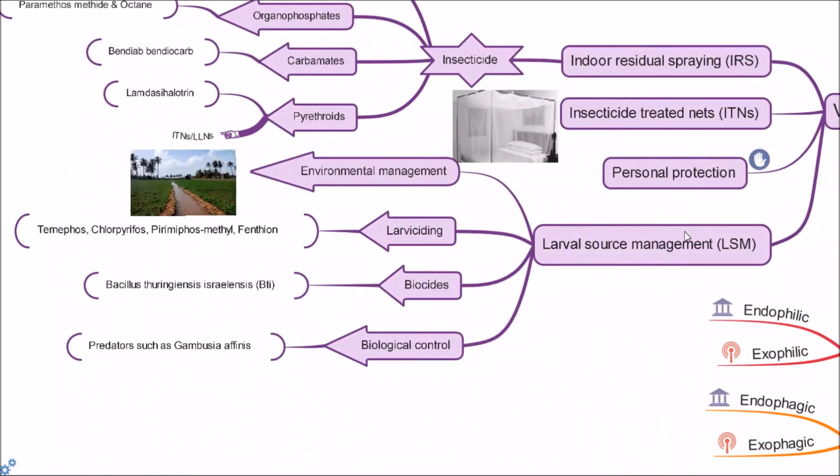Last measure is larval source management. These interventions target the larval stage of the mosquitoes and are used in developing countries where habitats are more stable and predictable.